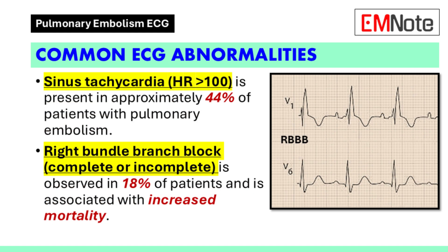The most frequently observed abnormality in pulmonary embolism is sinus tachycardia. This rapid heart rate, defined as greater than 100 beats per minute, is present in approximately 44% of patients with pulmonary embolism. Another frequent finding is right bundle branch block, which may be complete or incomplete. This conduction disturbance is observed in 18% of patients and is associated with increased mortality.